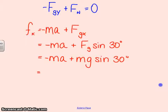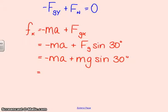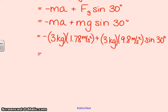So there's my equation that will get me the force of kinetic friction. I can now plug numbers in. The only number that I really need to look up here is mass, and the problem tells me it's a 3 kilogram block. So, 3 kilograms times the acceleration I just solved for, which is 1.78 meters per second squared, plus 3 kilograms times 9.8 meters per second squared. Now, remember that's a positive because we already took care of directions. Now, we have to multiply by the sine of 30 degrees.